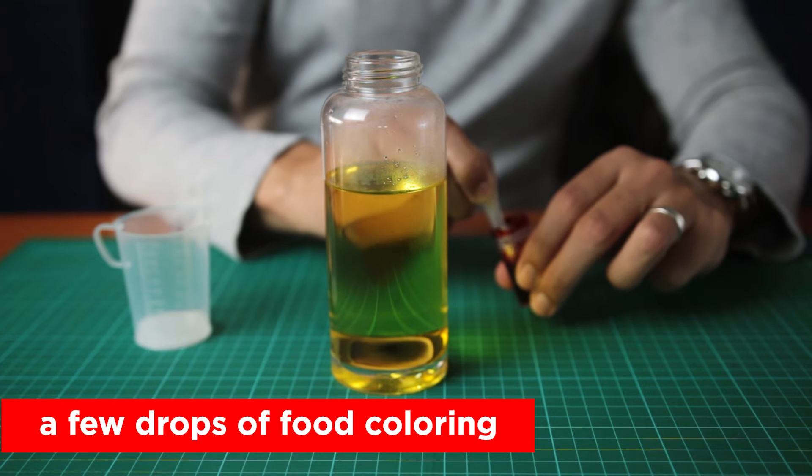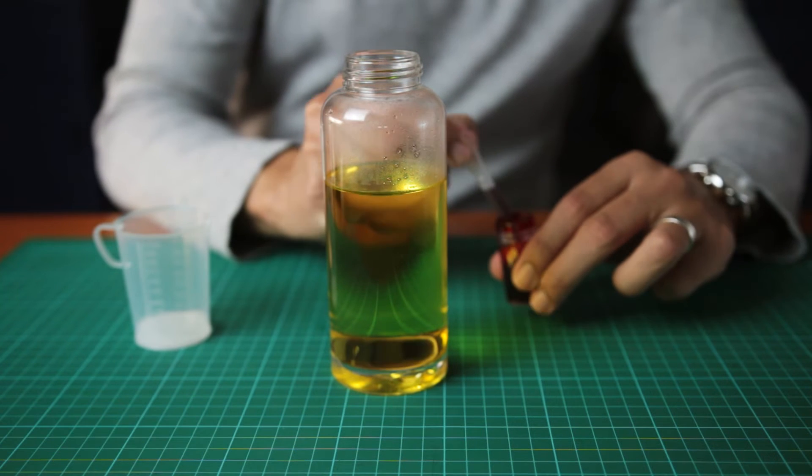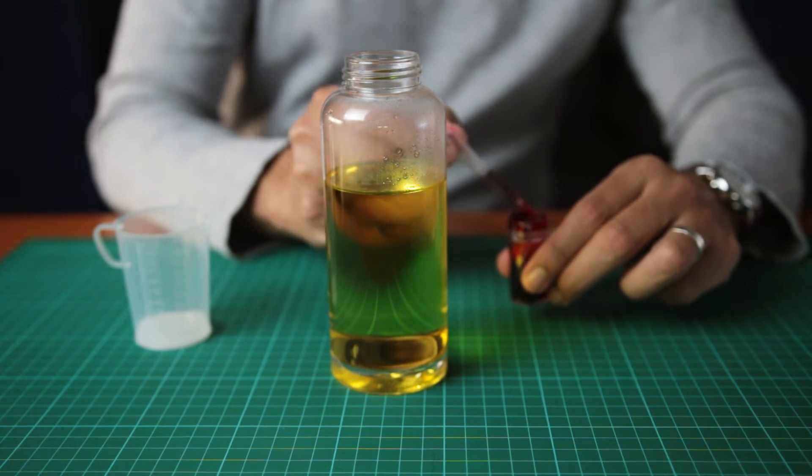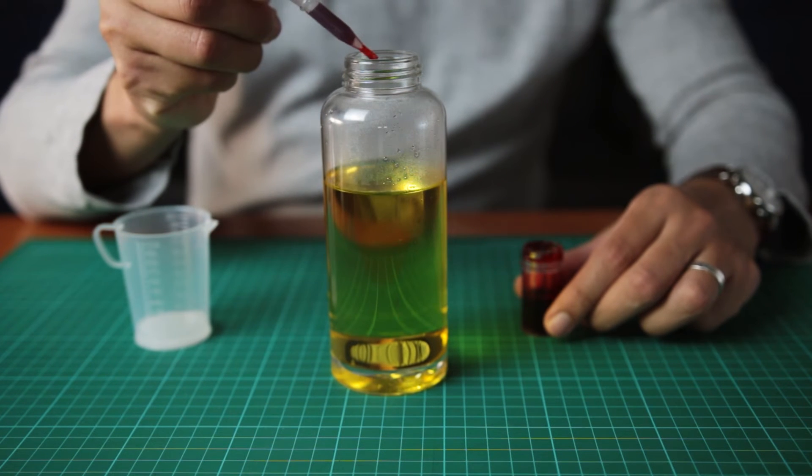Now, add a few drops of food coloring. You can choose any color you want. But today, I'm going to use red to make it look more like lava.